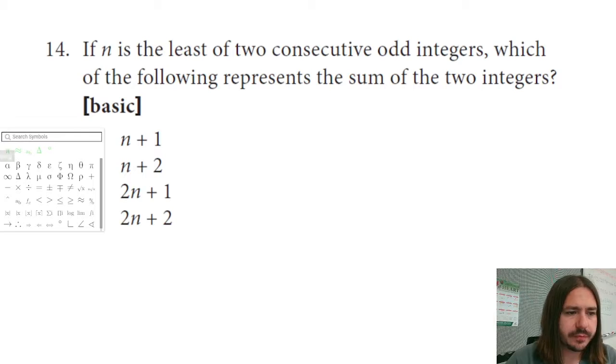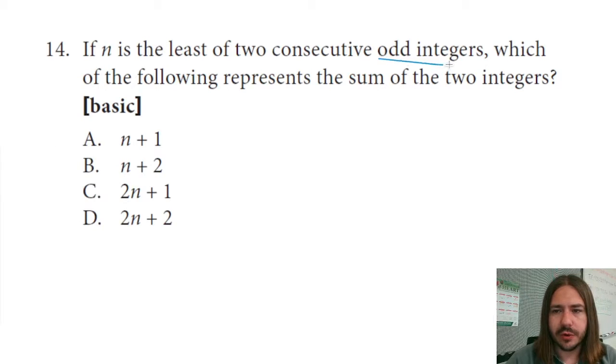So odd integers are going to be numbers that are whole numbers that are not divisible by two. So we're talking numbers like 1, 3, 5, 7, 9. Really it's every other number, starting with 1.